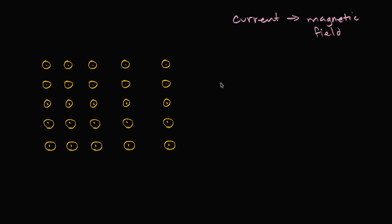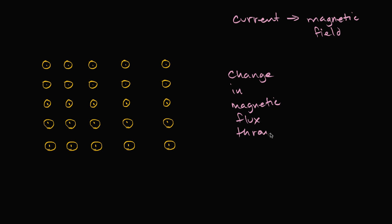We're going to be focusing on a change in magnetic flux through a loop, and we're going to see how this actually induces a current in that loop.